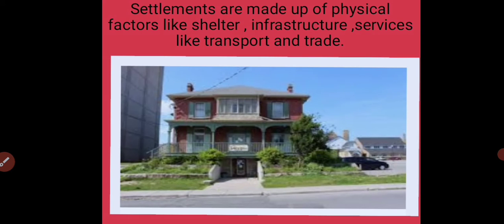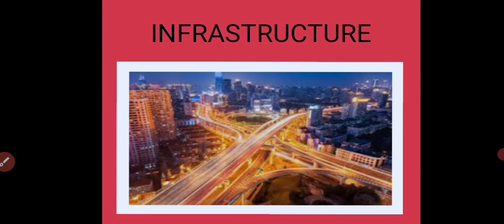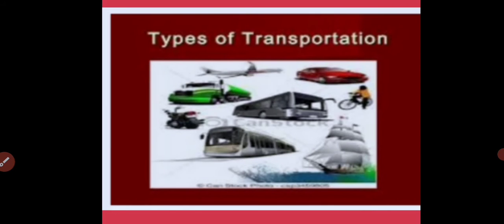Settlements are made up of physical factors like shelter, infrastructure services like transport and trade. Different factors affect where settlement is possible, such as the type of shelter, infrastructure services like roads, transport, and buildings. These are factors that affect the settlement, and we will now study them in detail.